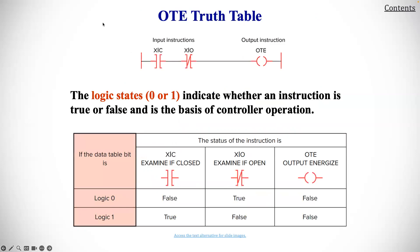Here is the OTE truth table. The logic state zero or one indicates whether an instruction is true or false and is the basis of controller operations. Here we see XIC, XIO, and OTE for these different types of scenarios in this truth table.